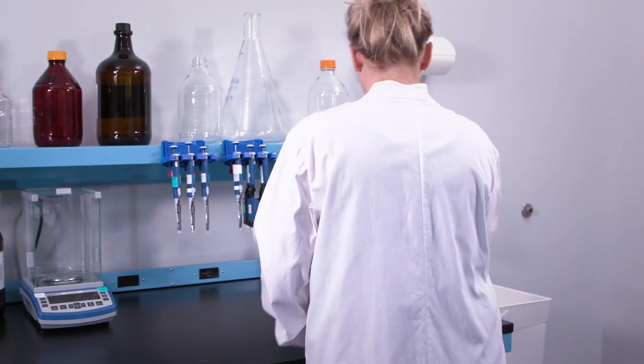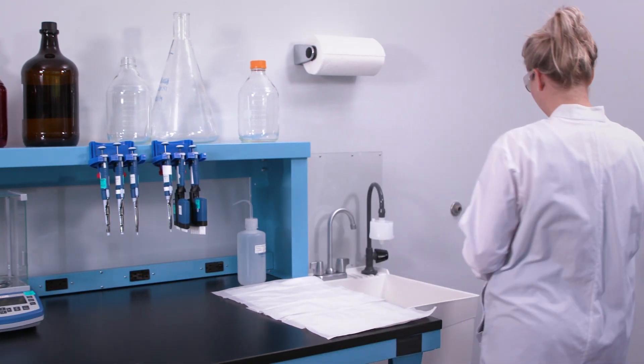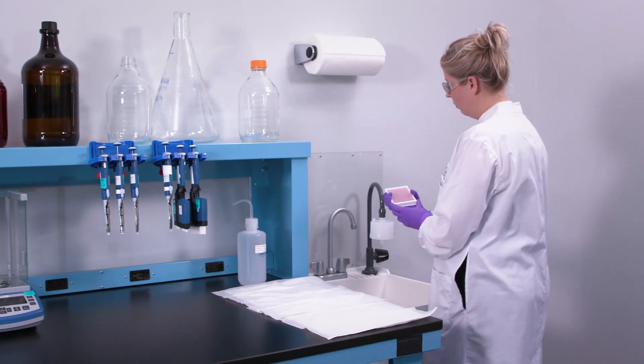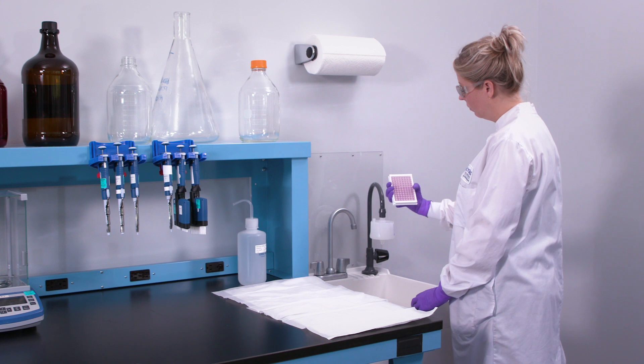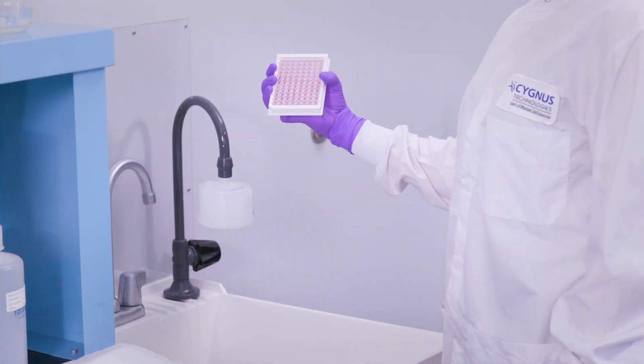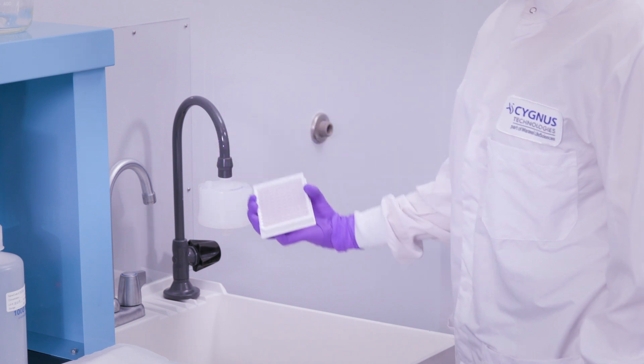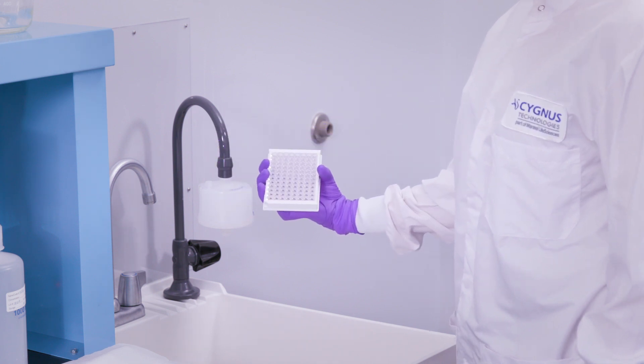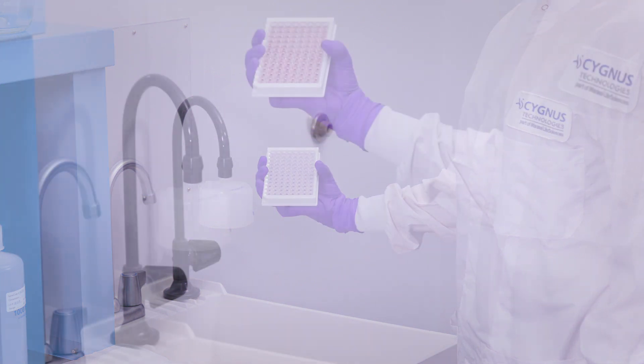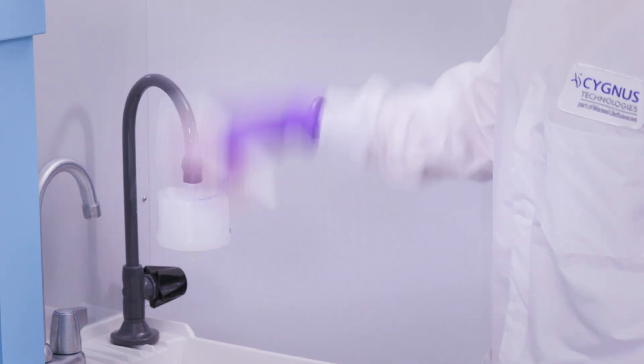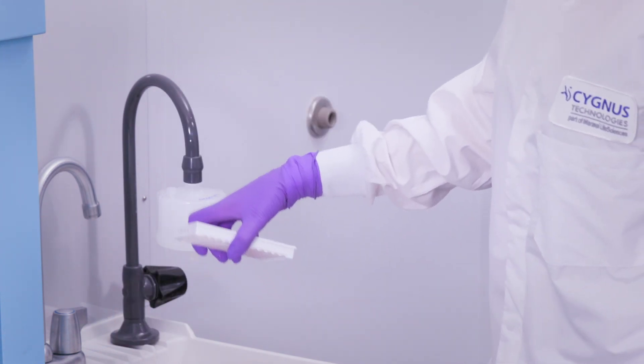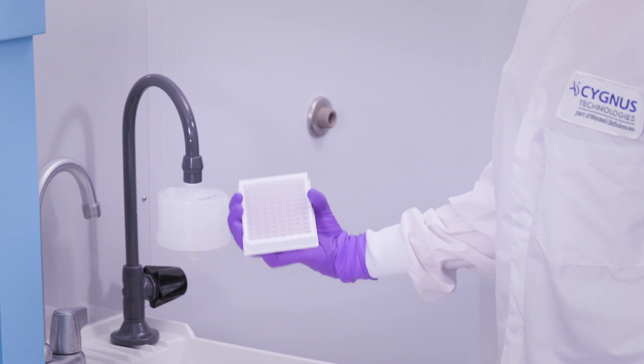Next, hold the plate over the sink and then turn the plate upside down while rapidly accelerating your arm and hand downward in one single motion. Then abruptly stop your arm. This will force the liquid from the strips into the sink. When done properly, you should not get any liquid on your fingers or on the outside of the strip wells and plate holder.